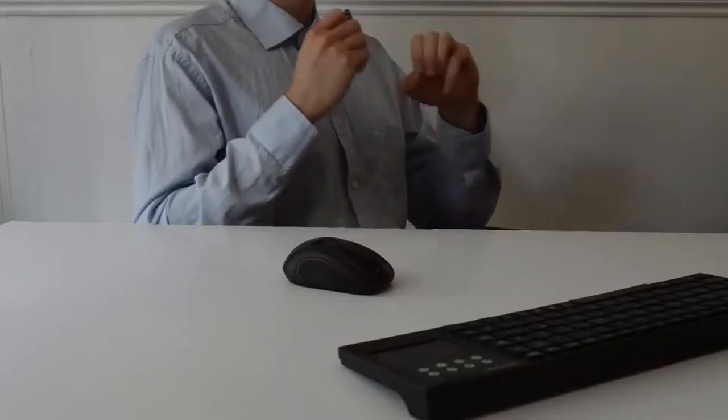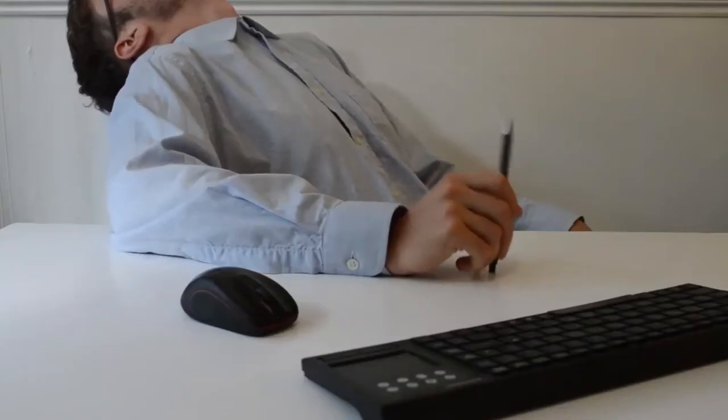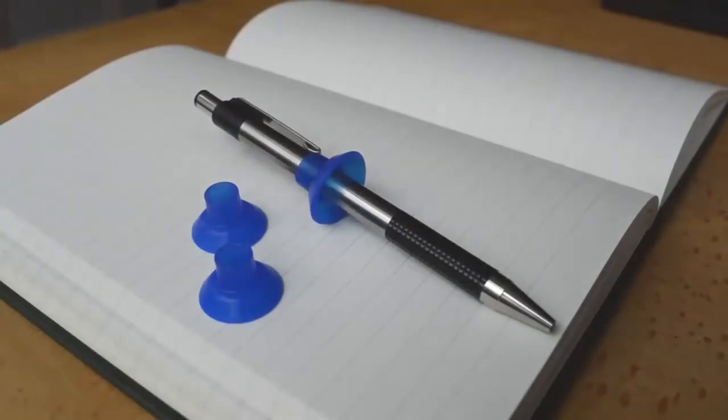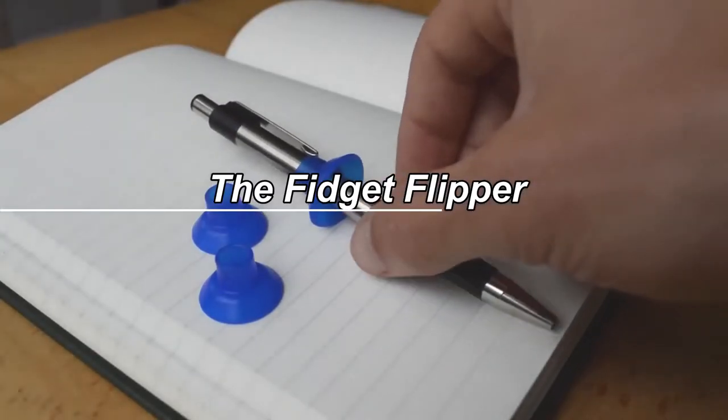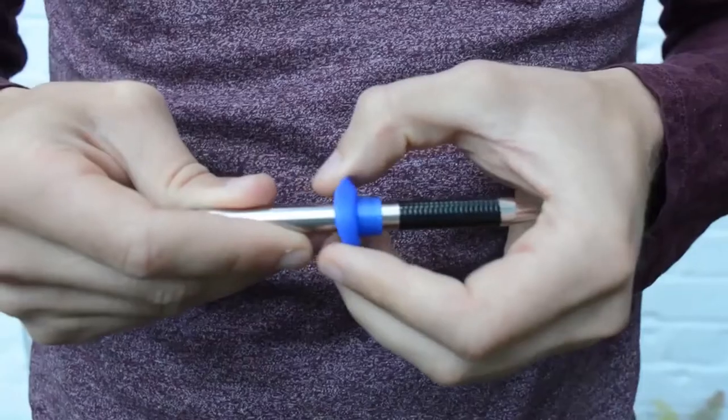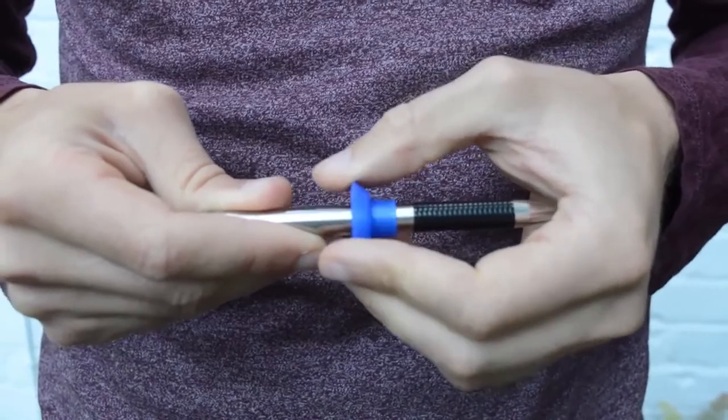Ever felt annoyed with the sound made by people who are always clicking their pen? Or maybe you are one of them yourself? The fidget flipper may solve that annoying problem. It is a very simple design, just a flat cone rubber ring structure that wraps around any pen size that is compatible with it.